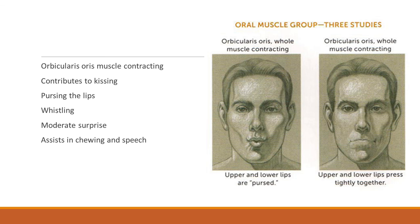This muscle also assists in chewing and speech. On the left, the upper and lower lips are pursed. On the right, the upper and lower lips are pressed tightly together — a child might do that to refuse eating something. Other reasons to press lips tightly together include playing a musical instrument, especially a brass instrument.